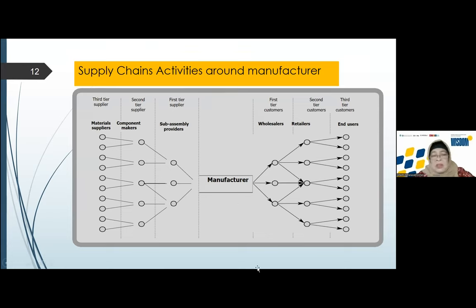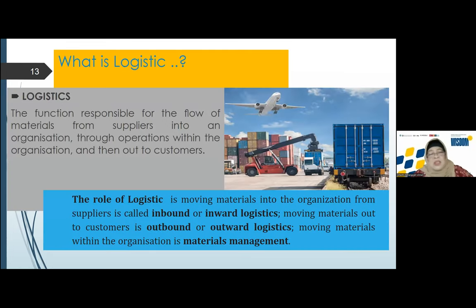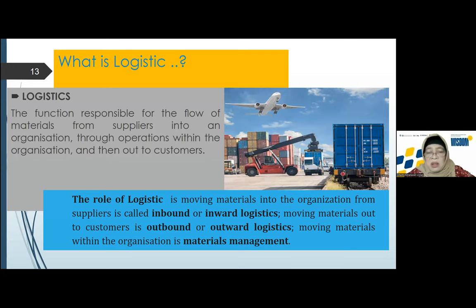Material supply, component makers, and so on. Now, this is supply chain. Right now, we come to logistics. The logistic function is responsible for the flow of material from the supplier into an organization, through operations within the organization, and then out to the customer. Logistics is not only concerned with one institution — it is close to every single point of organization in the supply chain system.